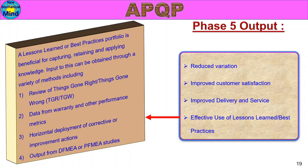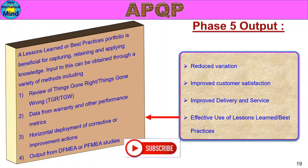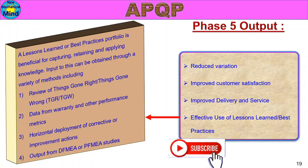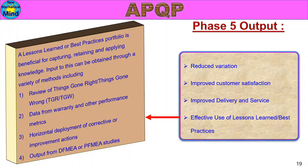All companies doing APQP will record lessons learned and best practices from each project, storing that knowledge for future improvement. Using these for future projects, we can reduce cost, improve quality, and apply best practices. We can use lessons learned from things gone right, things gone wrong, customer warranty, and performance tests to identify corrective actions. Finally, we can use DFMEA and PFMEA studies for improvement and lessons learned activity.